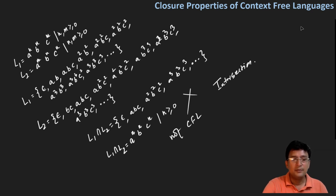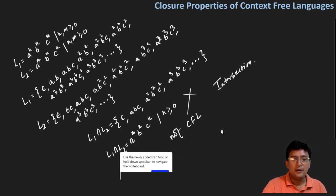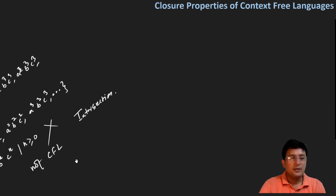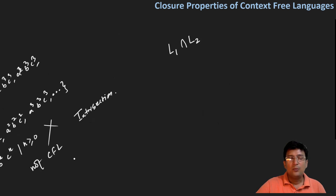Now let us discuss complementation. We already know that context-free languages are not closed under intersection. We will use this property to prove what happens under complementation. By set theory (De Morgan's law): the complement of (L1 complement union L2 complement) equals L1 intersection L2.